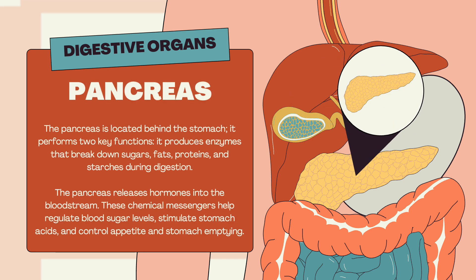The pancreas is located behind the stomach and performs two key functions. It produces enzymes that break down sugars, fats, proteins, and starches during digestion. The pancreas also releases hormones into the bloodstream. These chemical messengers help regulate blood sugar levels, stimulate stomach acids, and control appetite and stomach emptying.